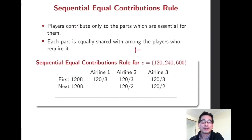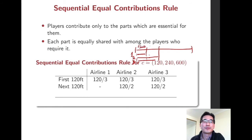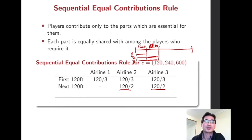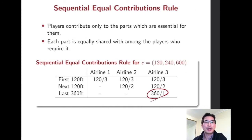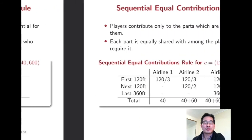For the second part — the additional 120 feet — Airline 1 is not going to use it; only the second and third airlines use this part, so they split that additional cost equally. The remaining part is 360 feet, and only the third airline requires this part, so only Airline 3 pays for it. This is the allocation based on the sequential equal contributions rule.